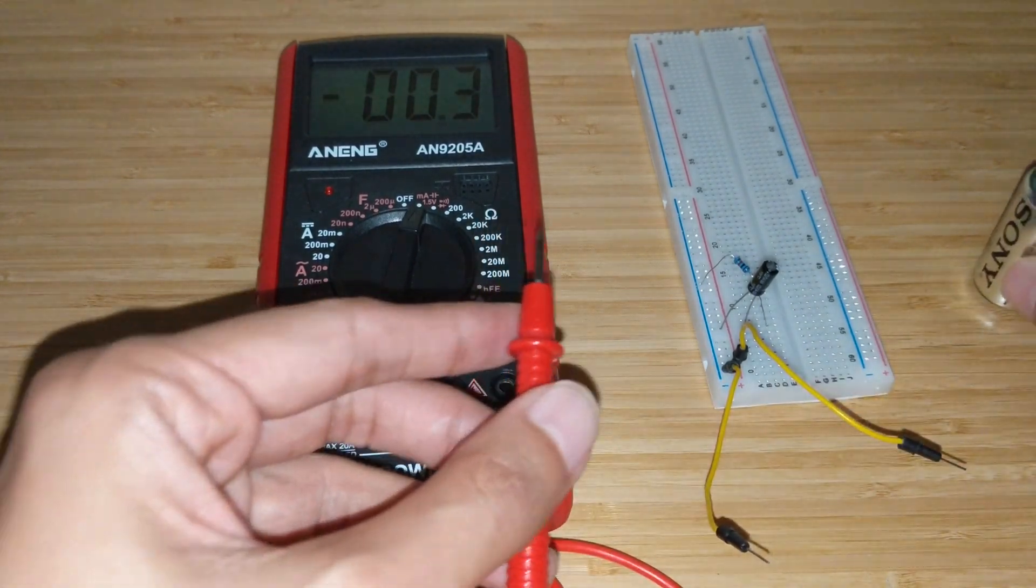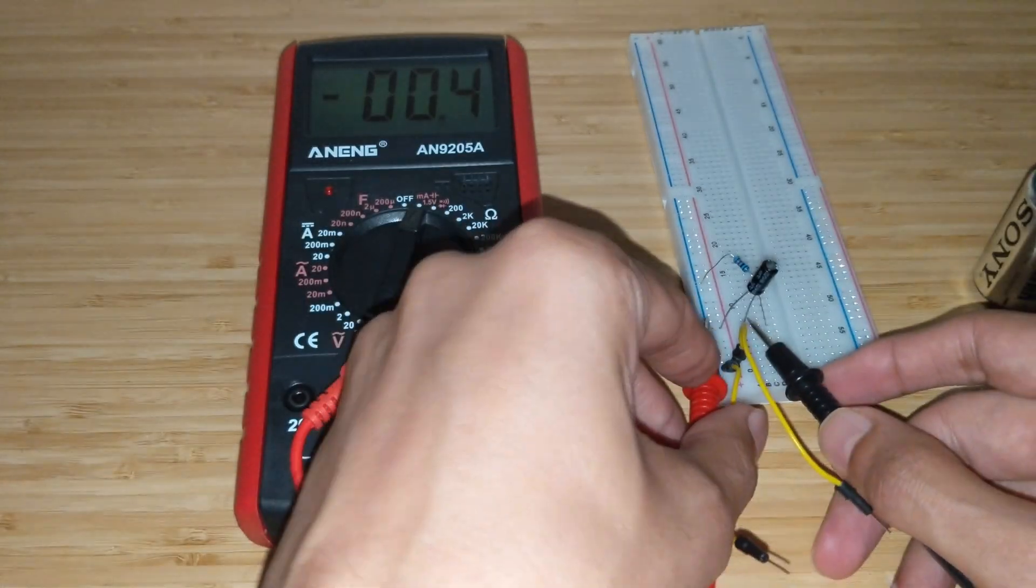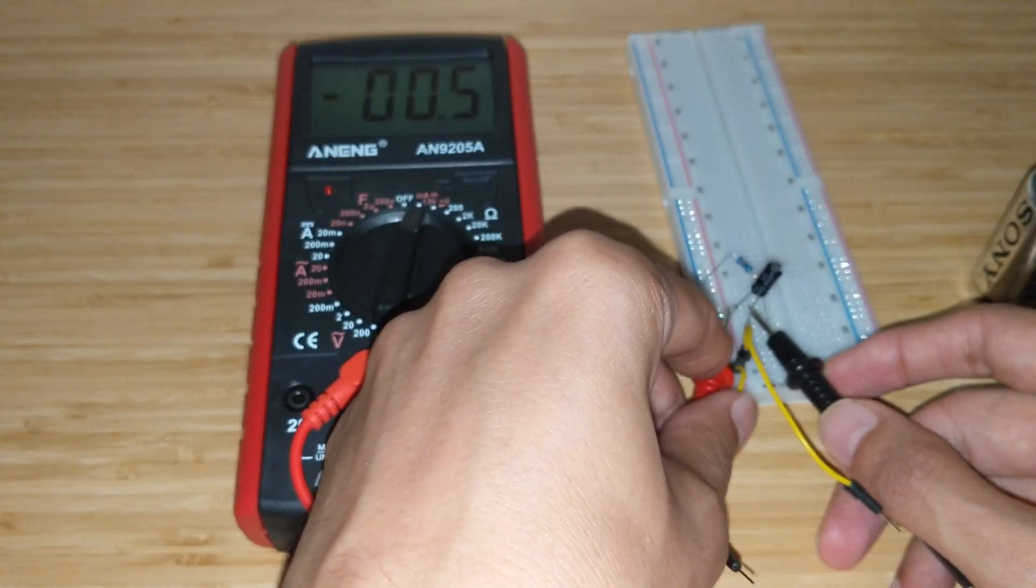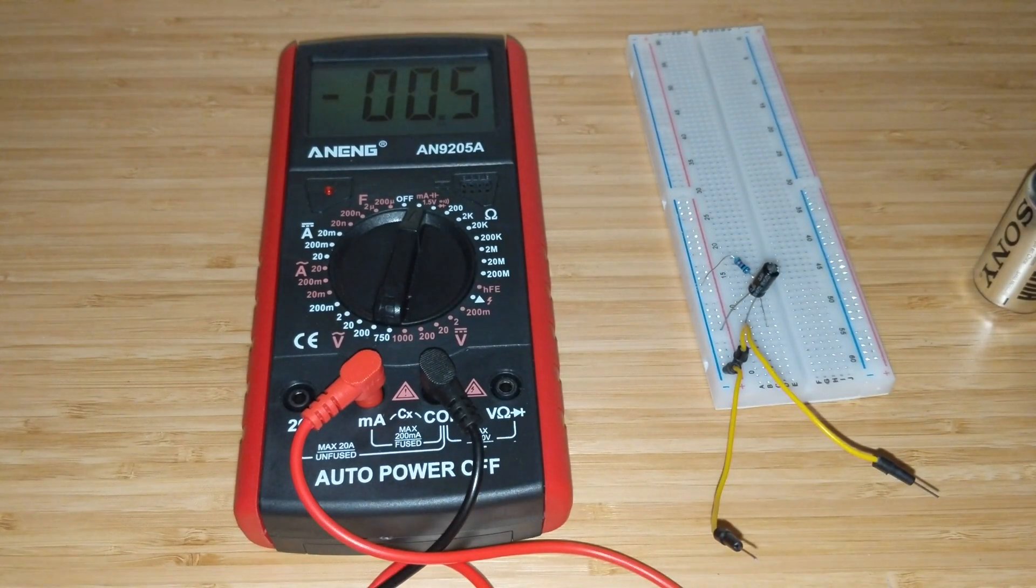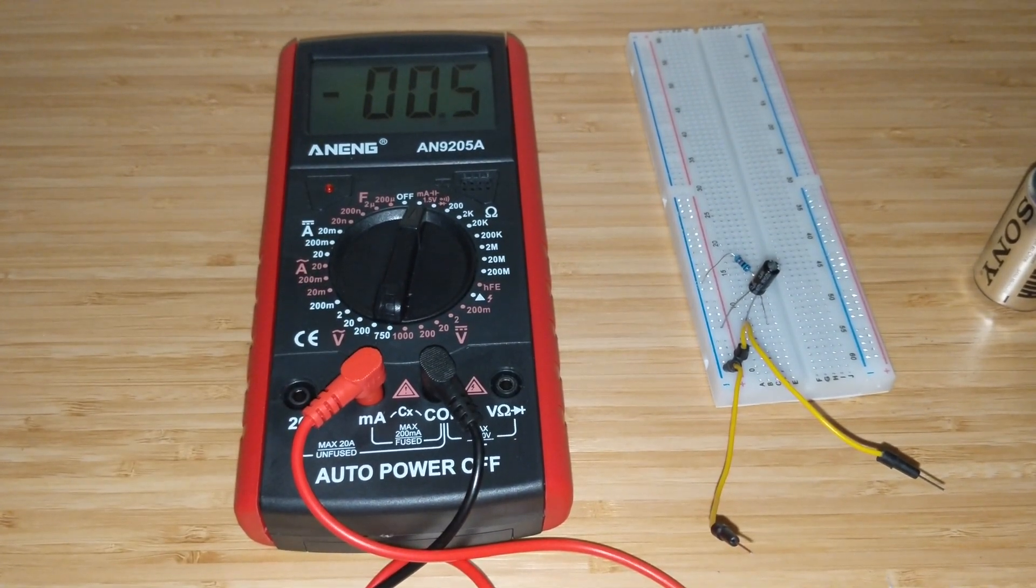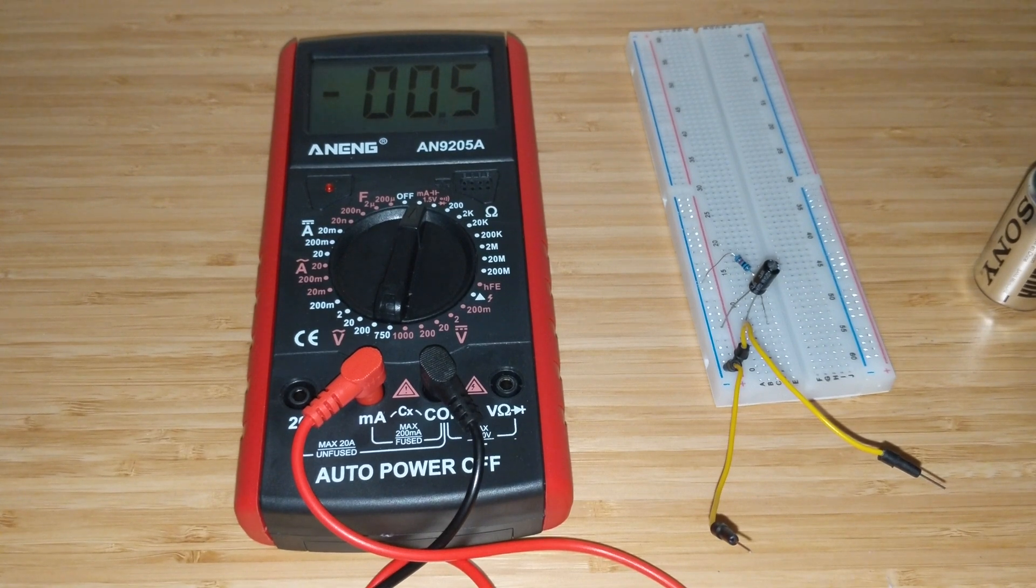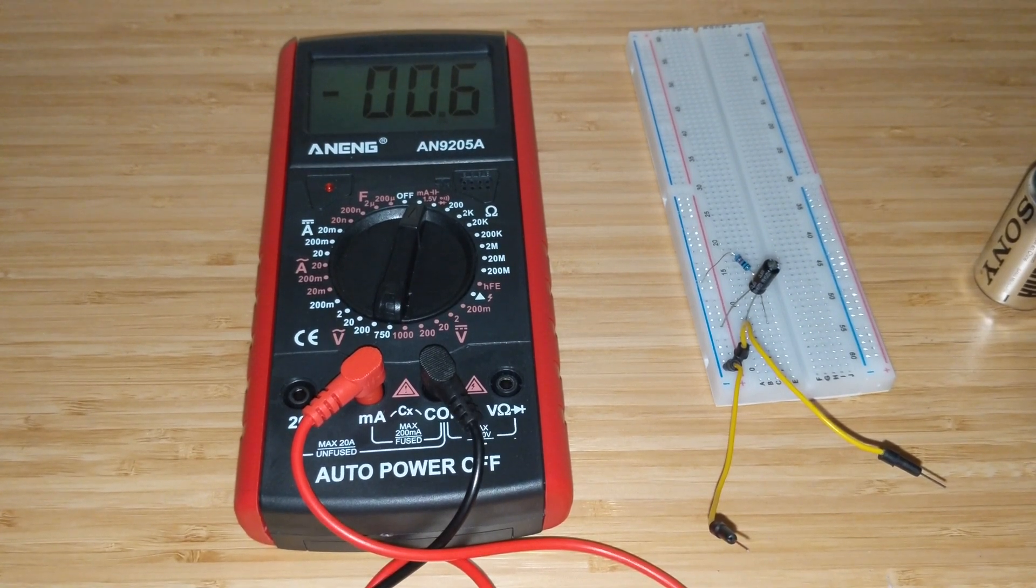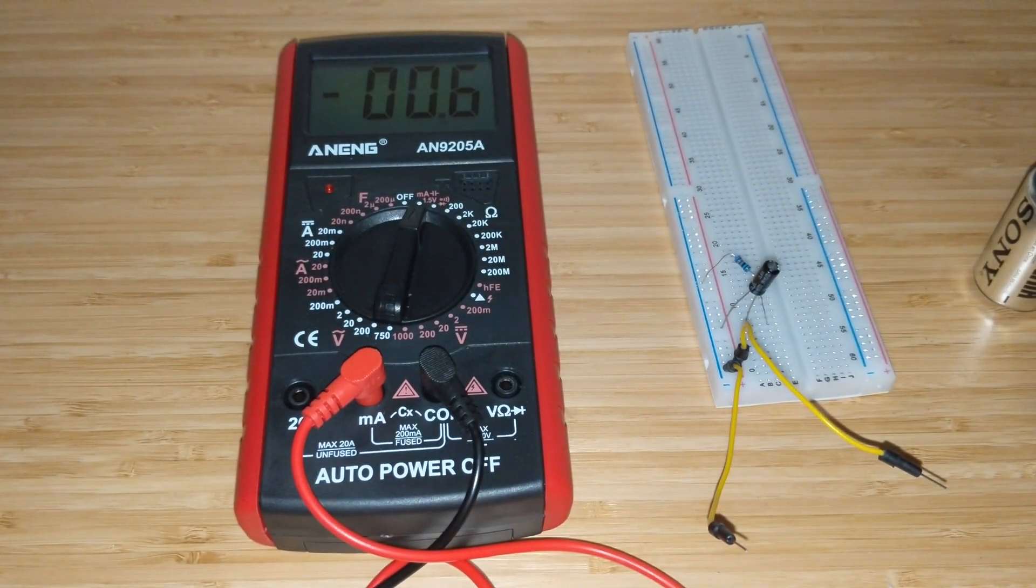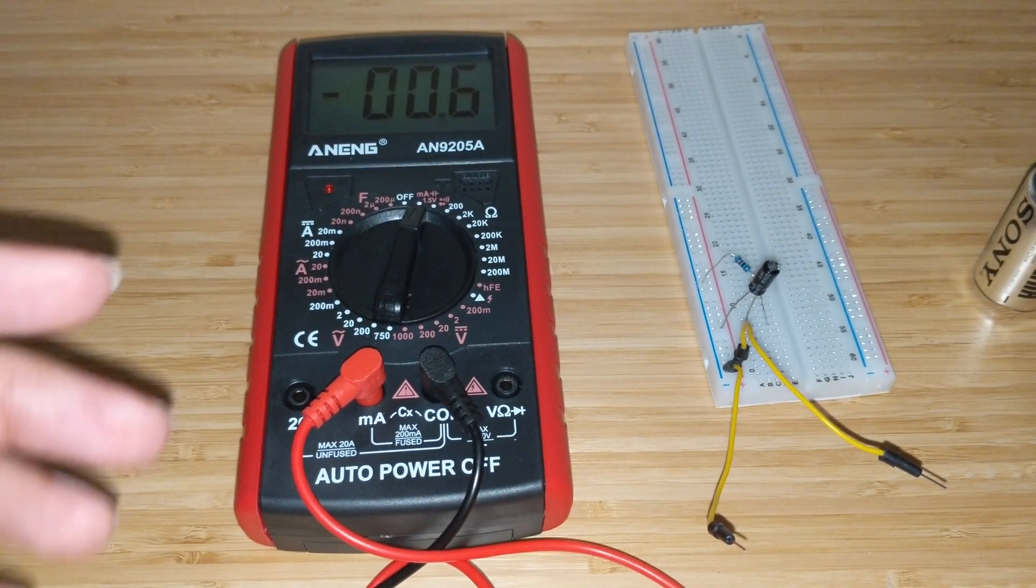Of course not. In fact, what has happened is because the multimeter is presenting a very small resistor in series and then measuring the current through the resistor, the capacitor actually quickly discharged to the resistor and now it doesn't hold any current or any voltage rather.